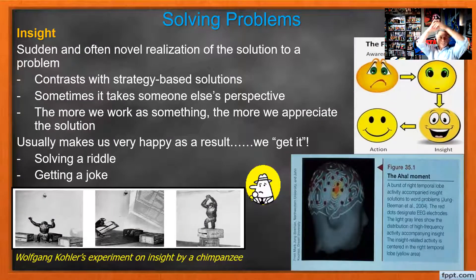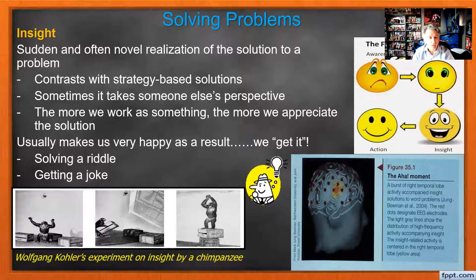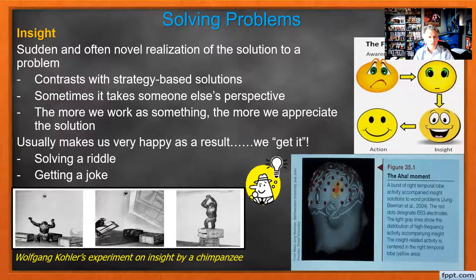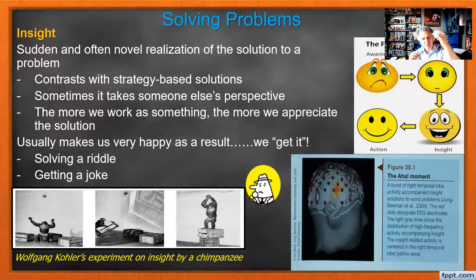Once we come up with a solution, we suddenly have insight — suddenly knowing how something works. When somebody tells you a riddle and you can't come up with the solution, you're searching all over your brain. For example: how do you make seven even without doing any sort of mathematical formula? You might think, I can't add, subtract, multiply, or divide — how do I turn seven even? The answer is: you take away the 'S.' It's the word 'seven,' not the number seven. Now you have the insight. It's like when somebody tells you a joke — it's funny the first time because you couldn't come up with the solution.